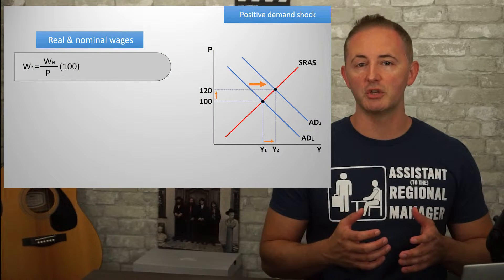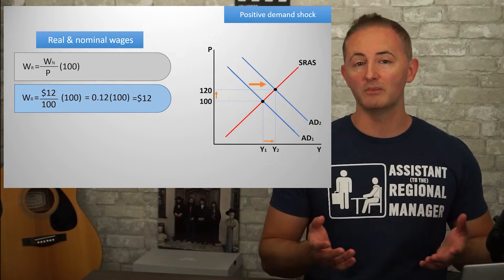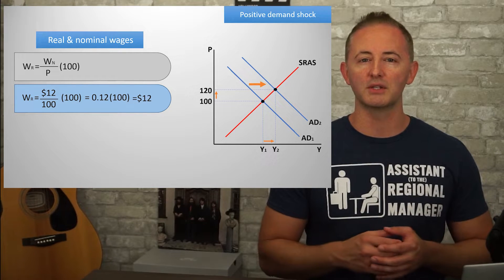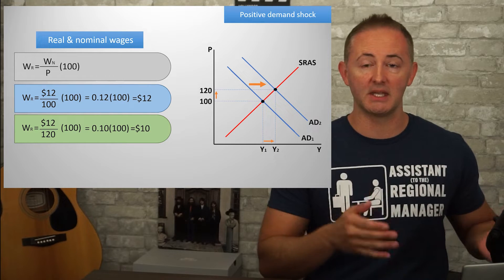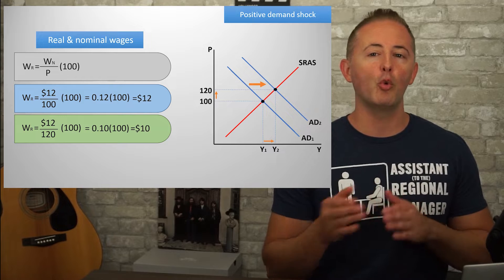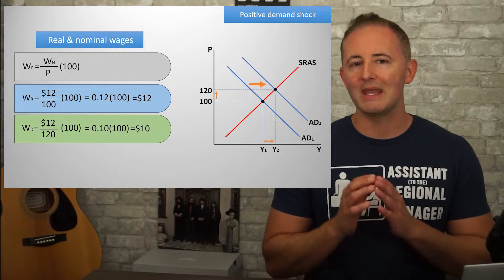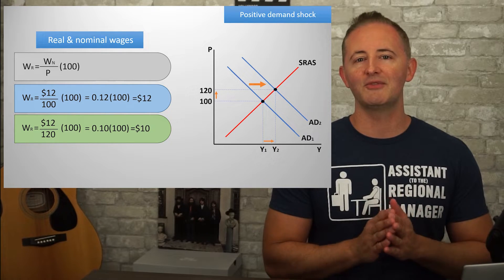There are two types of wages: real and nominal. A nominal wage is the dollar amount of the wage a person gets paid, while real wages control for inflation and show us the actual purchasing power of the wage. We learned in 3.3 that nominal wages are sticky in the short run. So when the economy experiences this positive demand shock, nothing happens to nominal wages in the short run. However, the same isn't true for real wages. Real wage equals nominal wage divided by price level times 100. Suppose that initially the nominal wage is $12 and the price level is $100. $12 divided by 100 times 100 equals $12. But then after the shift, the price level has increased to $120. The nominal wage hasn't changed because of sticky wages, but the real wage is now $12 divided by 120 times 100, which equals $10.